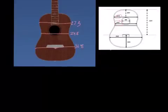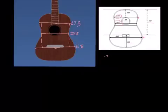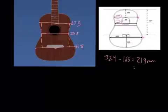What we need to find is from top to bottom through approximately right here. We need to find the distance from here on the guitar to about right here. They give us 324 and also 165, so you can do 324 minus 165, which gives you 219 millimeters. Changing it to centimeters, that would be 21.9 centimeters, which is approximately the distance from here to here.